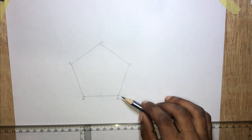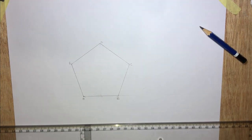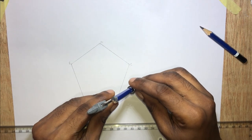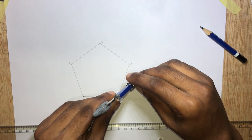What we'll do is to bisect the line BC. Step on point B, open to half the distance BC.